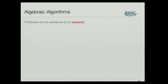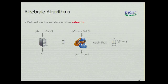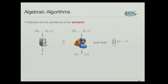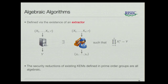We require this reduction to be an algebraic algorithm. Consider an algorithm which is given as input some group elements and uses randomness R, then produces another group element. We say that this algorithm is algebraic if there exists an extractor which, given the same input, produces a description of the output in terms of the original input group elements. I want to emphasize that it is the security reduction we assume is algebraic — this is not an assumption we should make about an arbitrary adversary. I also want to highlight that the security reductions of the existing KEMs are in fact algebraic, so this doesn't seem like an overly restrictive assumption.